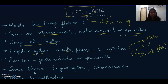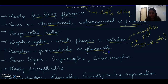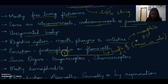Since the anus is absent, excretion is carried out by protonephridia or flame cells. There is no difference between the two — a bundle of flame cells is called protonephridia.